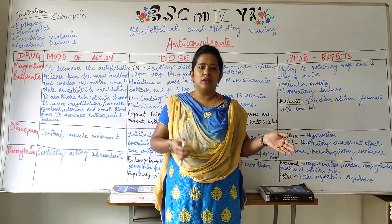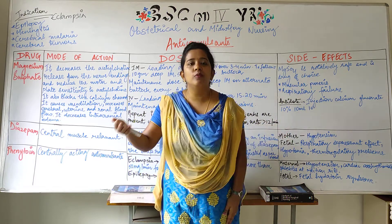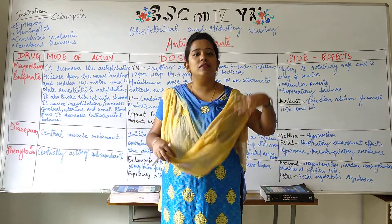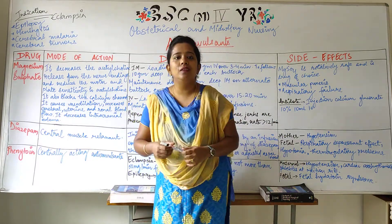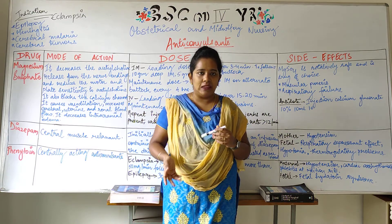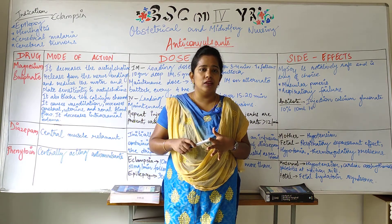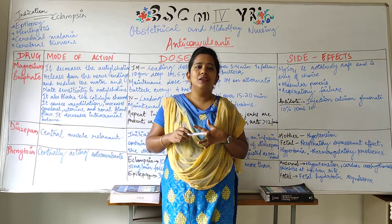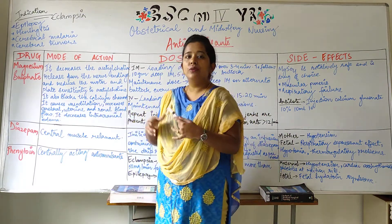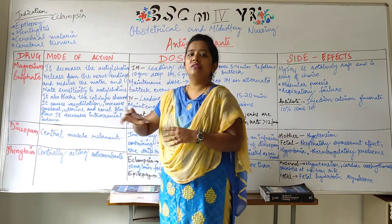The indications for giving anti-convulsants — drugs given to treat convulsions in a pregnant mother — include eclampsia as the first and prime reason, then epilepsy, meningitis, encephalitis, cerebral malaria, other cerebral infections, and cerebral tumours. Anti-convulsants can be given either as prophylactic therapy to prevent convulsions, or as treatment when convulsions are occurring. The three most common drugs are magnesium sulphate, diazepam, and phenytoin.